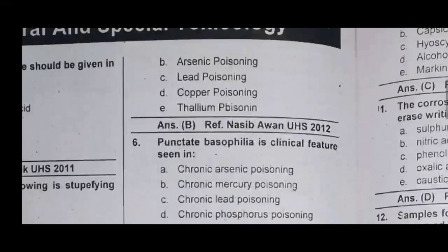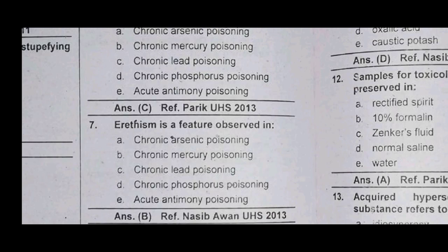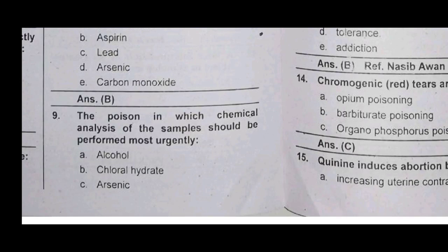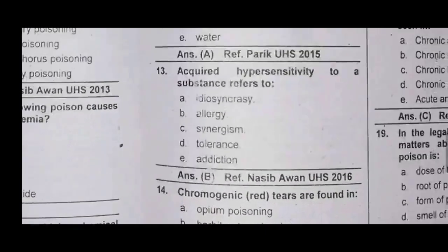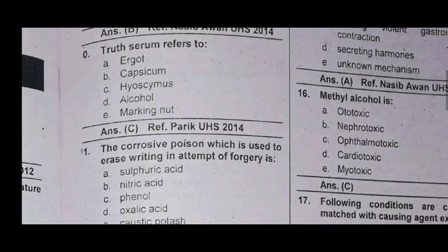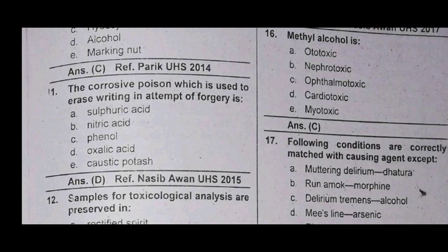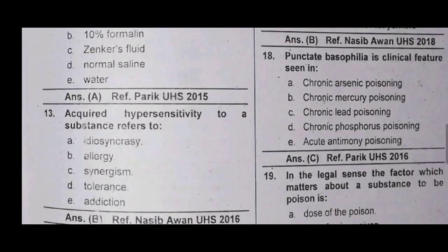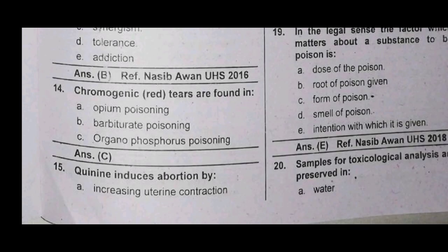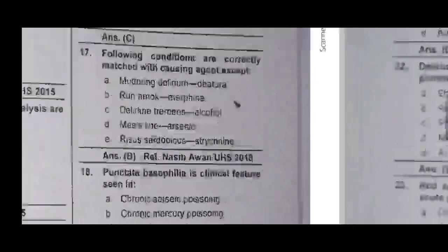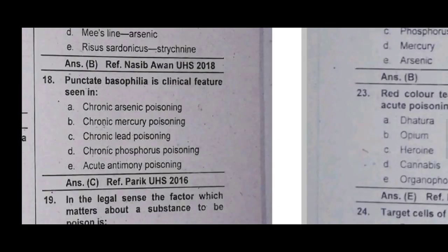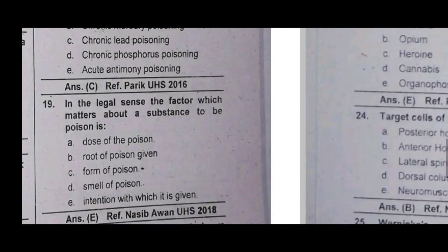Topics covered include: chronic lead poisoning, hypoprothrombinemia, chemical analysis, chloral hydrate, acidity, chlorophy poison, axelic acid, toxicological analysis, hypersensitivity, quinidine, abortion, inducing uterine contraction, alcohol, cannabis, and chronic lead poisoning — which determines that a substance is poison, it is in tension.